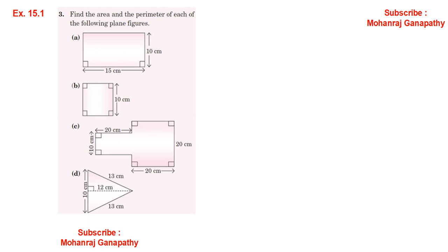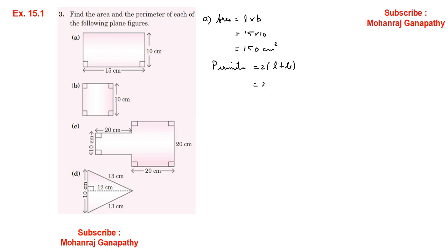Sum number 3: Find the area and perimeter of each of the following figures. Figure A is a rectangle: Area = Length × Breadth = 15 × 10 = 150 square centimeters. Perimeter = 2 × (L + B) = 2 × (15 + 10) = 2 × 25 = 50 centimeters.